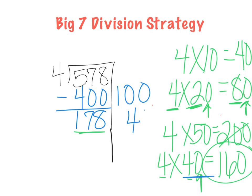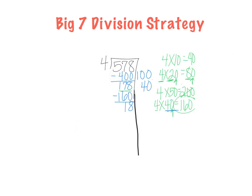So I'm going to pull out 40. We just figured out that 4 times 40 was 160. Now let's subtract that. 8 minus 0 is 8, 7 minus 6 is 1. Now I have a dividend of 18.